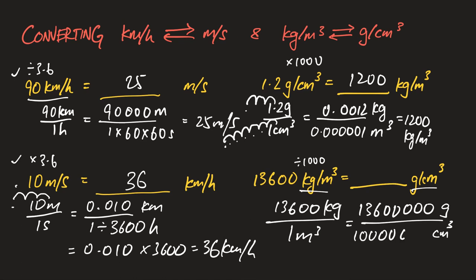You use your calculator and you cancel. Basically it's just divide by 1000 and the answer will be 13.6 gram per cm³. So that's how you do your unit conversion for speed and density. If you cannot memorize the shortcut, always fall back on this method.